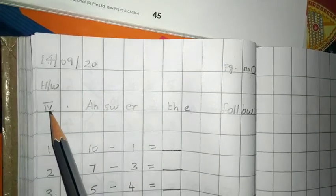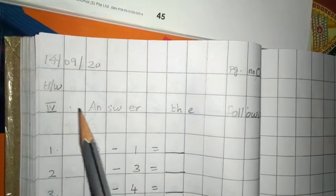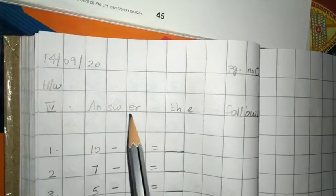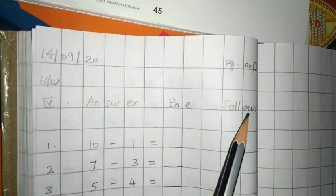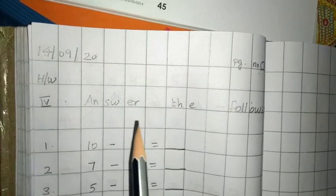After writing HW, write Roman numeral IV, then leave one box, then write 'Answer the following' like this. Again leave one line.